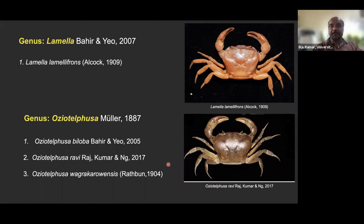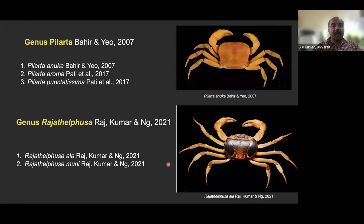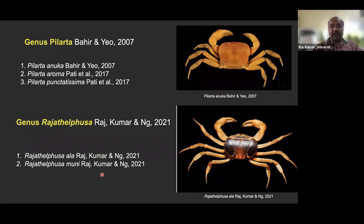Pilarthagin is represented by three species. Most recently, last month we published a paper describing a new genus called Rajatelphusa, with two species — ali and muni.